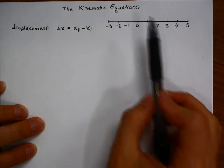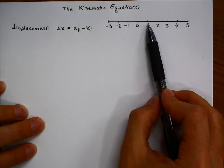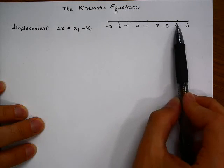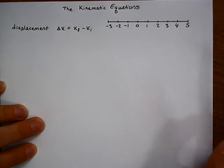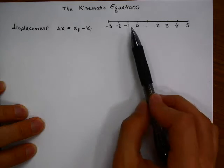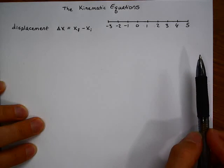For example, if you were moving from one on a number line to four, your displacement would be your final position of four minus your initial position of one. And that would equal three, for example meters, three meters.